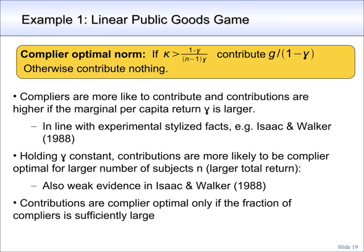If we hold the marginal per capita return constant, then contributions are more likely if there is a larger number of subjects, which means a contribution has a larger total return. Experimentally, Isaac and Walker also show that contributions increase in the number of subjects, even though the results are less strong. Finally, contributions are complier optimal only if the fraction of compliers is sufficiently large. So one would predict that a person makes positive contributions where many others contribute, but contributes nothing in an environment with many selfish people.